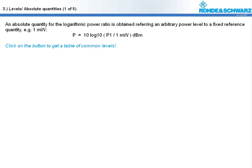From the relative values for power level P1 or U1 respectively, referred to power level P2 or U2 respectively, we obtain absolute values using the reference values above. These absolute values are also known as levels.